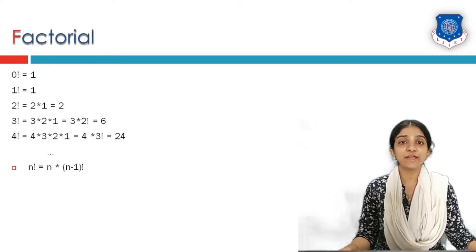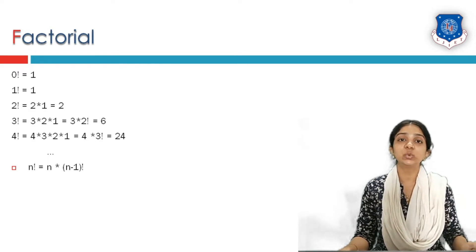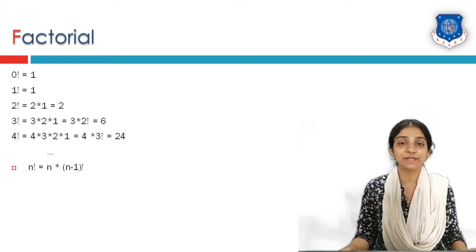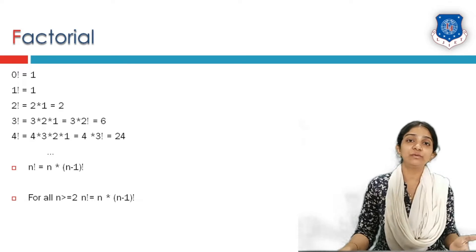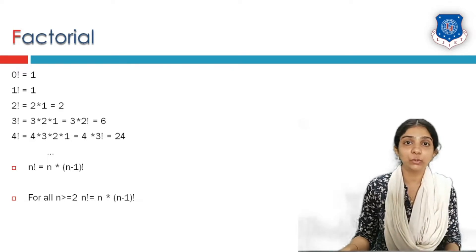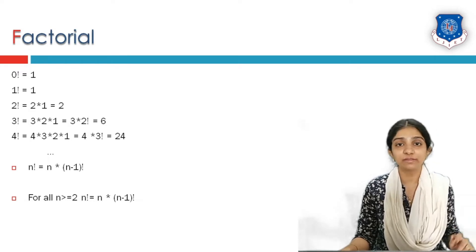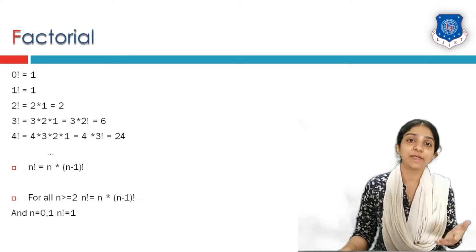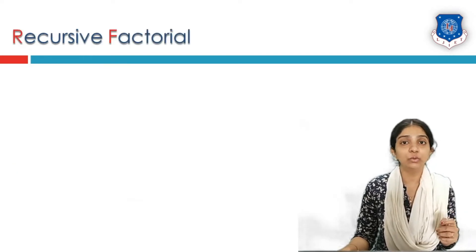Similarly, n factorial is given as n into (n minus 1) factorial. So for all values of n greater than or equal to 2, n factorial is n into (n minus 1) factorial. And for n equal to 0 or 1, the value is equal to 1.